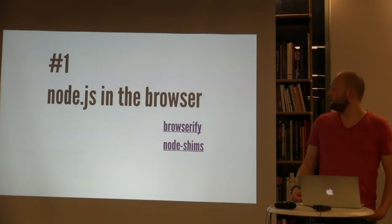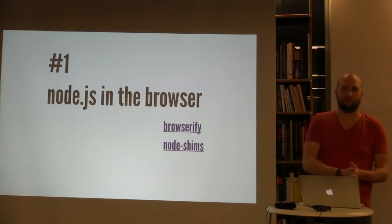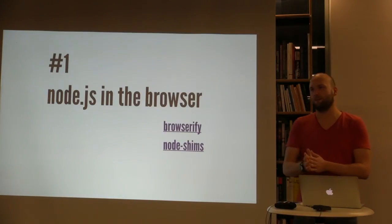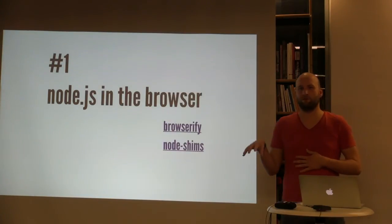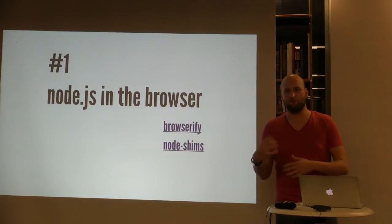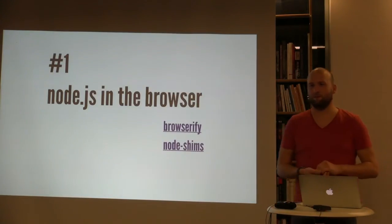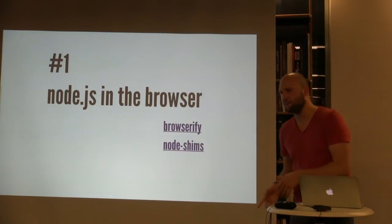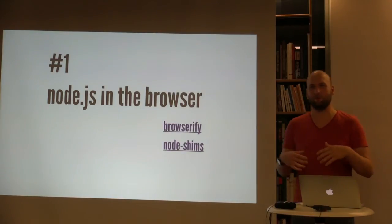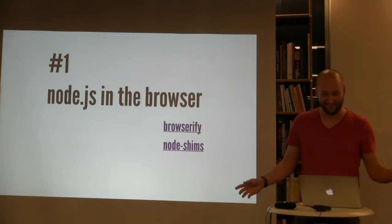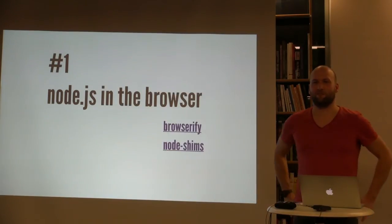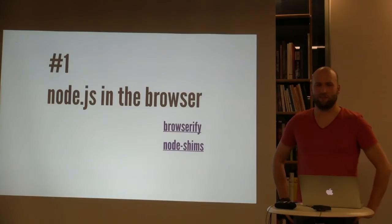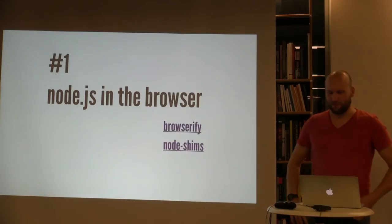Option two: we created Node shims — a collection of all the stuff that Browserify offers as replacement for the Node APIs — and we ported the whole thing to AMD. But then we had to fork all the libraries we used for IMAP and SMTP, which unsurprisingly is a whole lot. Fork all those to AMD and you lose all the advantages from upstream. So that was not really a good option either.